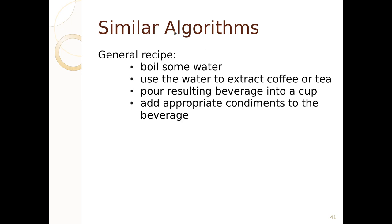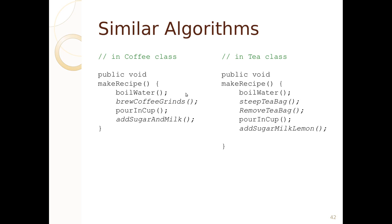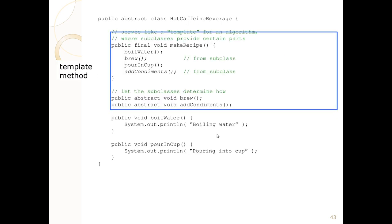The general recipe — they have similar algorithms. We're noticing this and we want to generalize it: pour some water, use water to extract coffee or tea, pour the beverage into a cup, add appropriate condiments. In our template method, the make recipe can boil water, it can brew, it can pour in cup, and it can add condiments. We want brew and add condiments to be specialized — we want anyone who inherits this class to specialize brew and add condiments.